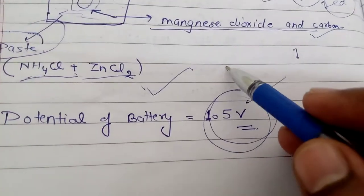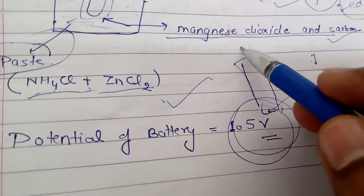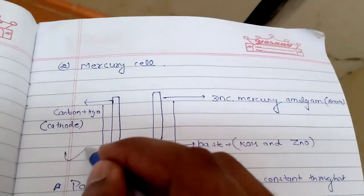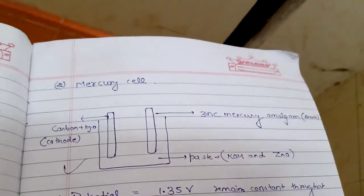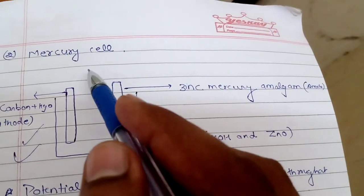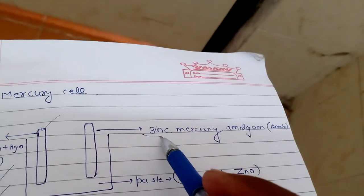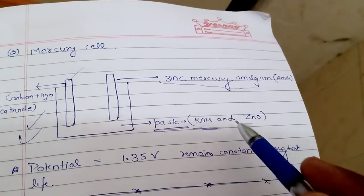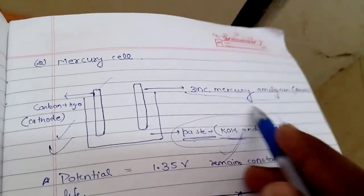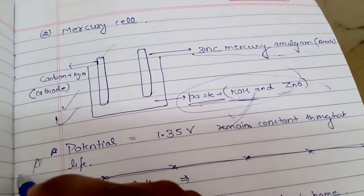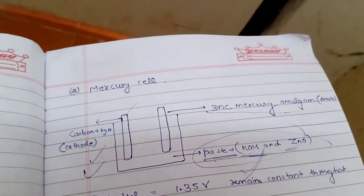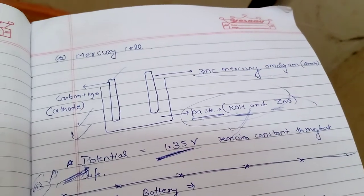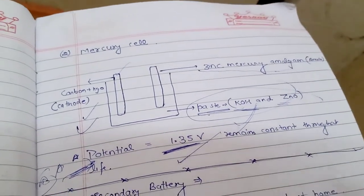Mercury cell is the large round cell used in wall clocks. In mercury cell, the cathode is made of carbon plus HgO, and the anode is zinc-mercury amalgam. The paste used is KOH and ZnO - remember which paste is used in which battery. The potential of a mercury cell is 1.35 volts, which remains constant throughout the life of the battery.